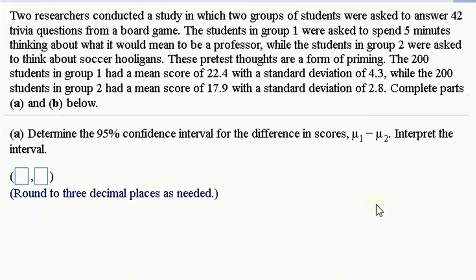Two researchers conduct a study in two groups of students. They were asked to answer 42 trivia questions from a board game. The students in group one were asked to spend five minutes thinking about what it would mean to be a professor, while the students in group two were asked to think about soccer hooligans. These pretest thoughts are a form of priming. And this is an actual study that was done. That priming with thoughts of being smart actually helps you to be smarter. That's very surprising, but apparently true. So the 200 students, we're asked to find a confidence interval for the difference in scores. So I'm going to go to StatCrunch.